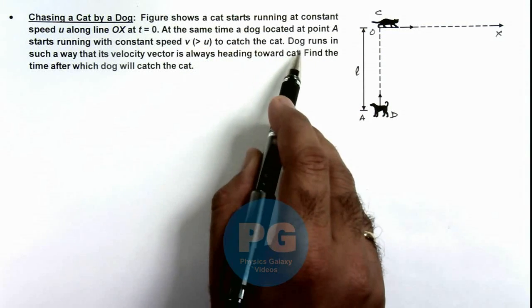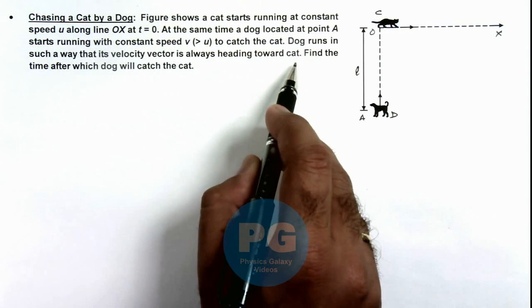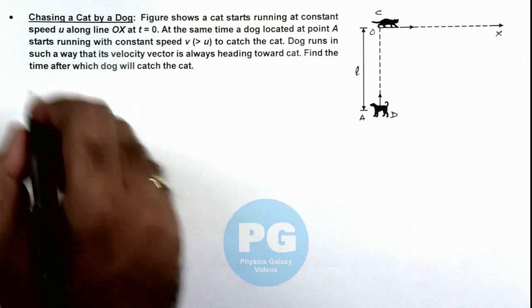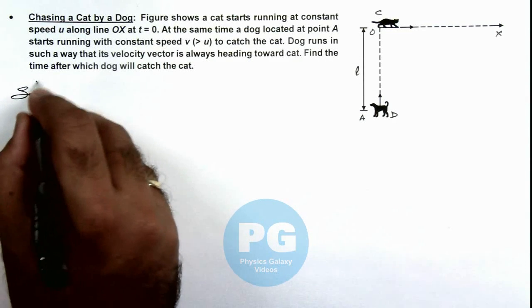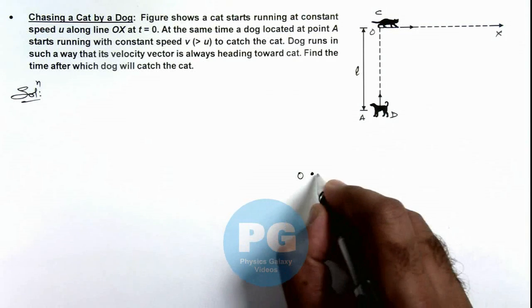Here dog runs in such a way that its velocity vector is always heading towards cat. And we are required to find the time after which dog will catch the cat. Here in the solution if we redraw the situation we analyze it carefully.